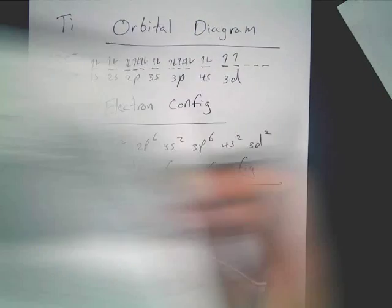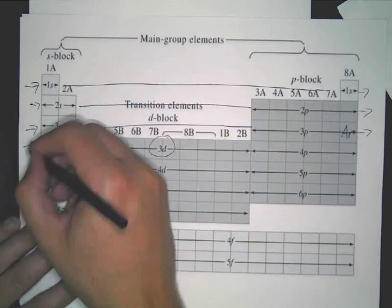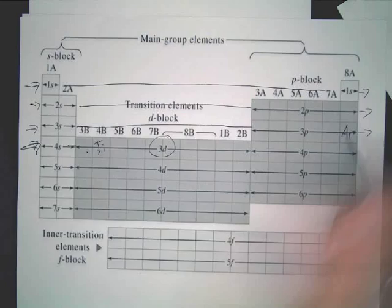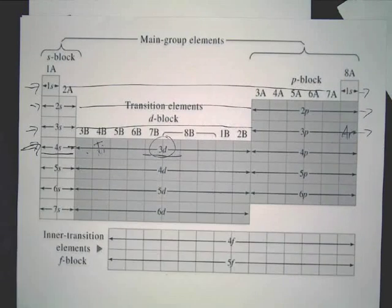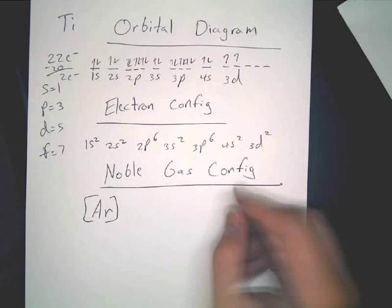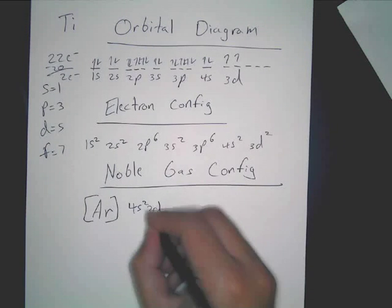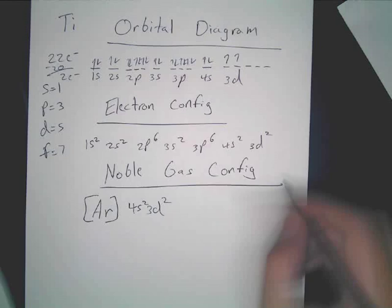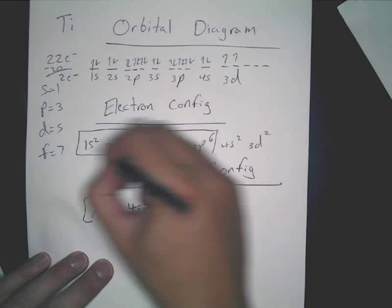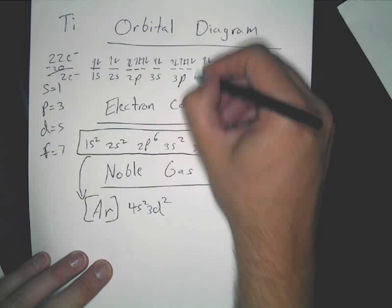So, we got argon right here. We're going to write only what comes after it, which in this case is what? 4S. 4S and 3D. Nothing else. So, you're just going to write 4S, and that's 2, and then 3D, and that's 2. So, we're saying all of this right here, that's equal to argon. Same thing with this.